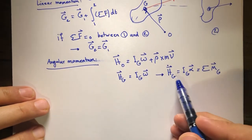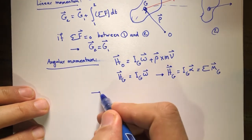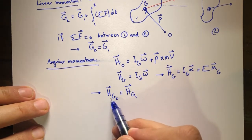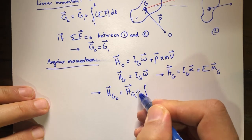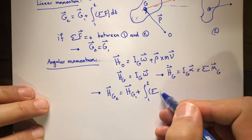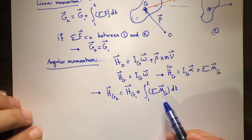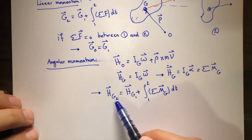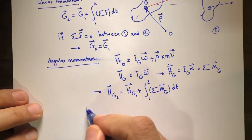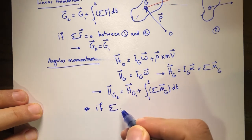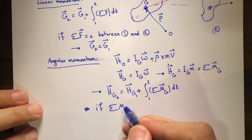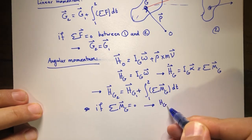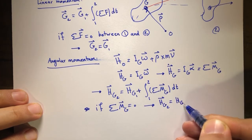If I integrate both sides of that equation after multiplying by dt, I get H_G2 equals H_G1 plus the integral from one to two of the sum of all moments about point G, dt. If I have an equation for the total moments about the centroid, I can integrate it to see how the angular momentum changes. If the sum of moments about the centroid is equal to zero from one to two, then we have conservation of angular momentum and the angular momentum does not change.